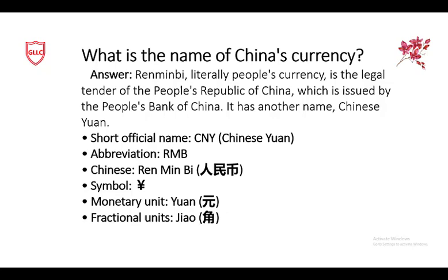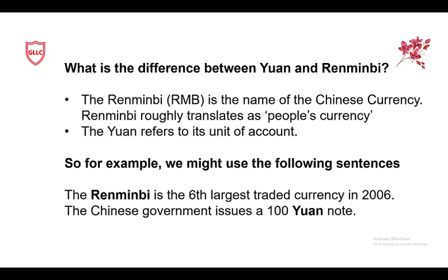A more common question people ask is: what is the difference between Yuan and Renminbi? Renminbi is the name of the Chinese currency — it roughly translates as 'people's currency' in Chinese. Yuan refers to its unit of account. For example: 'The Renminbi is the sixth largest traded currency in 2006' — here Renminbi is the currency name. 'The Chinese government issues a 100 Yuan note' — here Yuan is the unit. So those two examples clarify the difference.